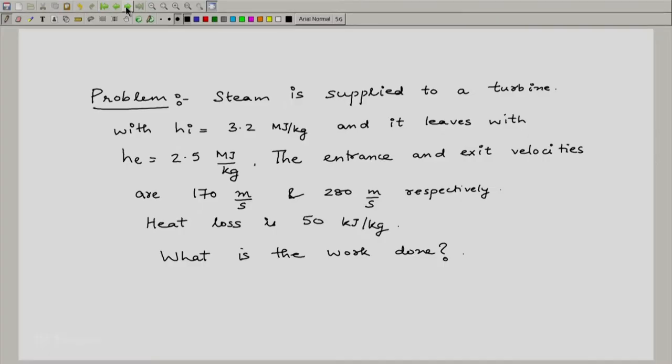Steam is supplied to a turbine with inlet enthalpy h_i equal to 3.2 megajoules per kg, and it leaves with h_e equal to 2.5 megajoules per kg.